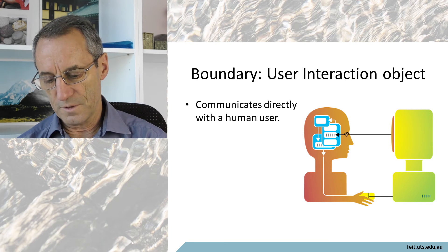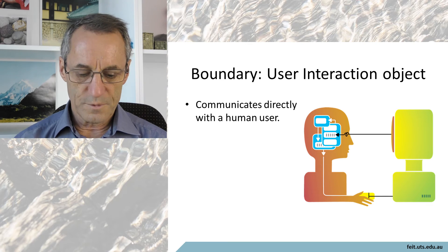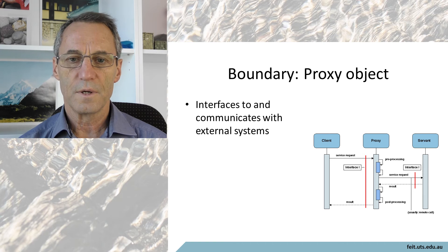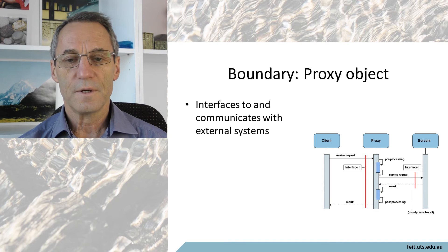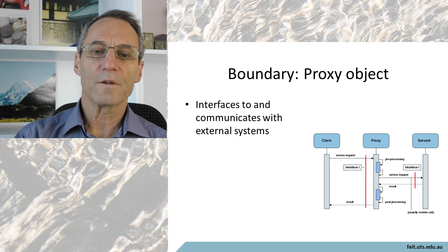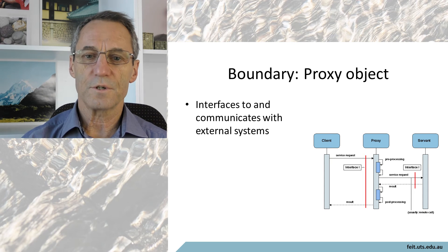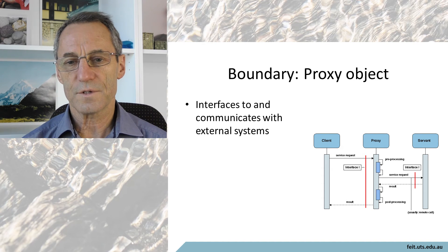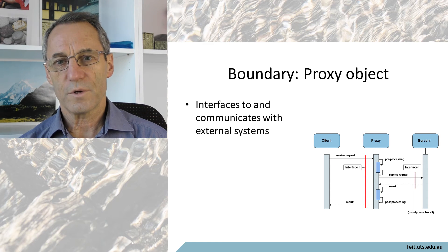A user interaction object communicates directly with the human user. A proxy object interfaces with and communicates with external systems - the meaning of proxy is that it stands for something else. As far as our system is concerned, what is dealing with the proxy is dealing with the thing on the other end. How to get things to and from the other end - through middleware, communication, security - that's the proxy's job, not our system's problem.